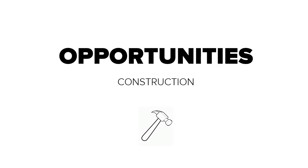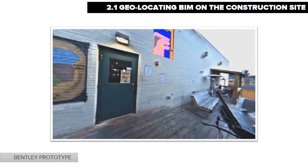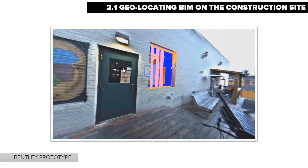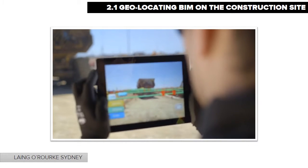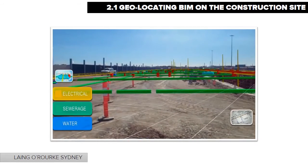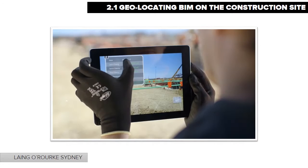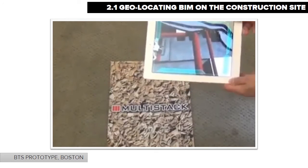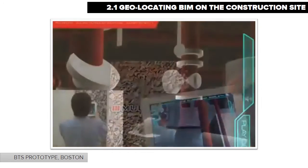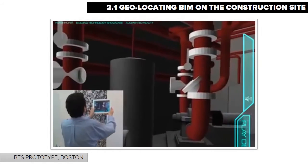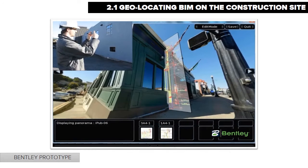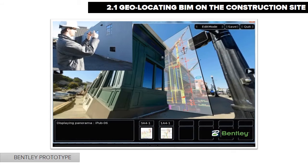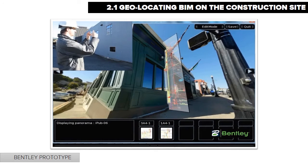There are many opportunities for mobile augmented reality applications in construction. Combining augmented reality with building information modelling can allow BIM data to be geo-located on the construction site. BIM data overlaid onto the construction site has three main uses: to visualize what is not yet built; to view what is hidden, such as buried elements or elements obstructed from view; and to see what cannot be seen, such as alignment information, drawing details, site boundaries or environmental effects.